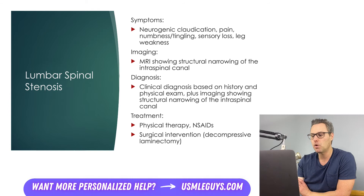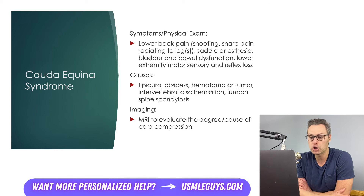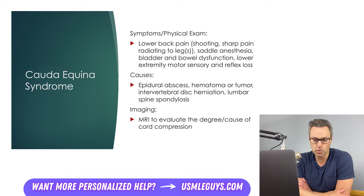Let's take a closer look at cauda equina syndrome, which occurs when the nerve roots of the cauda equina become compressed. There are many potential causes, including epidural abscess, hematoma, tumor, intervertebral disc herniation, lumbar spine spondylosis, or really anything else that can compress the cauda equina. The signs and symptoms of a compressed cauda equina include radicular lower back pain, saddle anesthesia, bladder and bowel dysfunction, as well as a loss of lower extremity motor function, sensations, and reflexes.